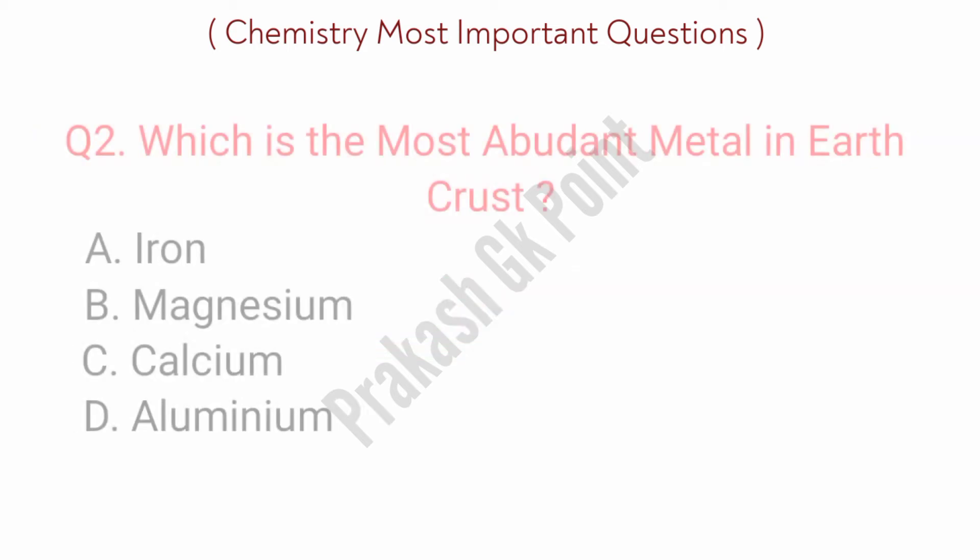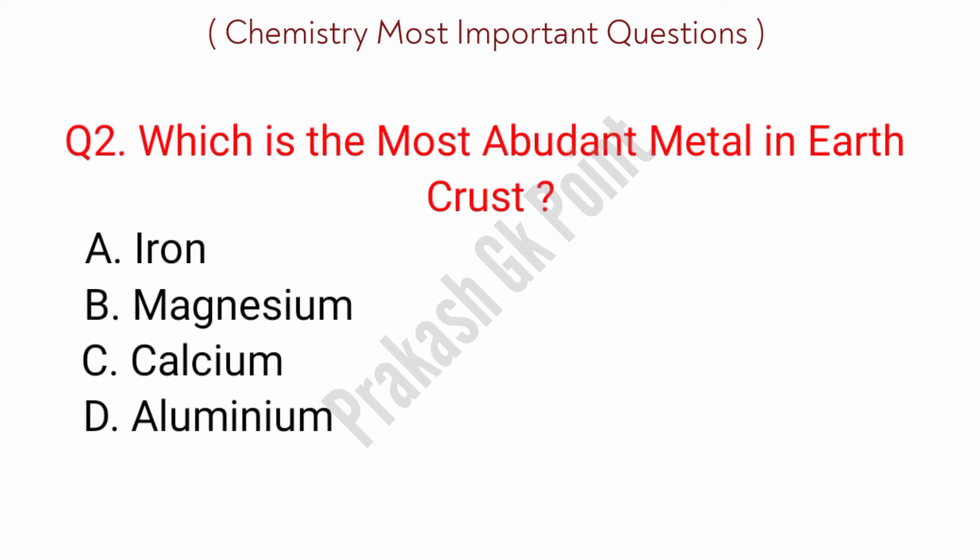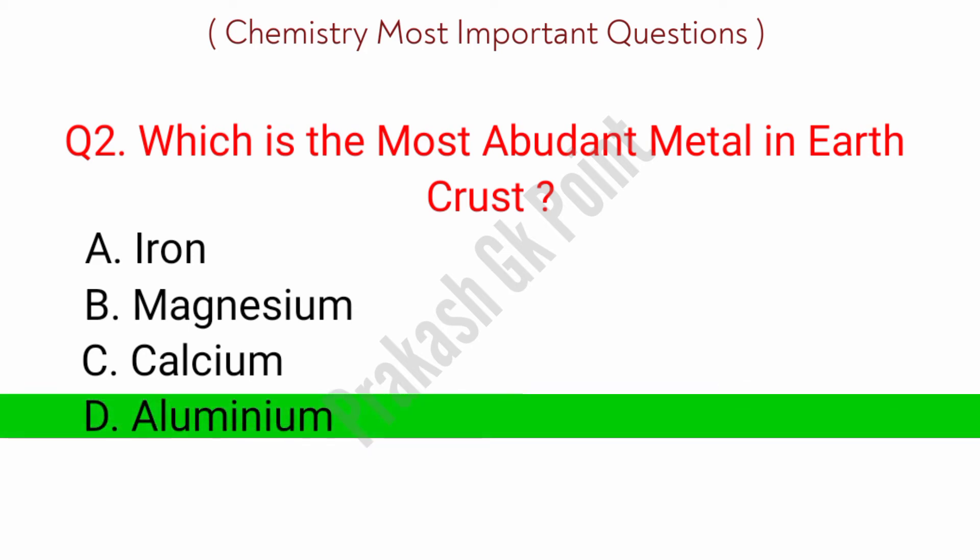Next question: which is the most abundant metal in the earth's crust? Answer: option D, Aluminium.